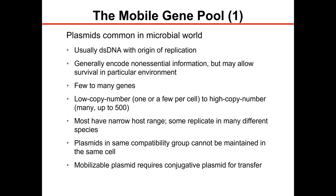Plasmids are found in most bacterial cells. They typically have few genes, but the genes they do code for can allow for survival in certain environments. The genes typically aren't necessary for replication. Some plasmids are low copy and some are high copy, which refers to how fast they replicate.